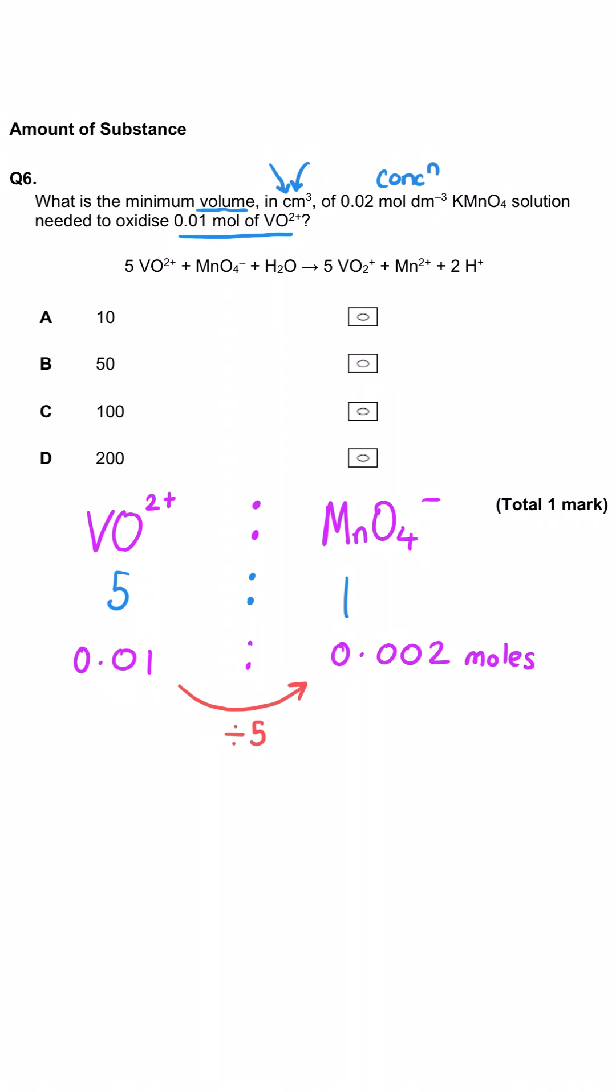Now we know the concentration of KMnO4 is 0.02, so volume is moles divided by concentration, which gives us 0.1 decimetres cubed. Our volumes are in CM cubed,